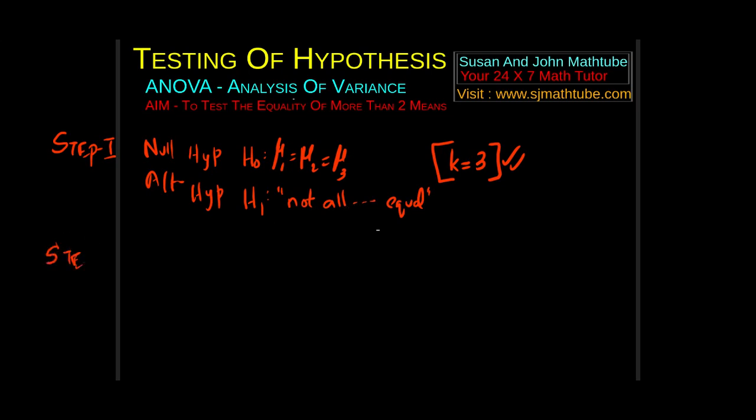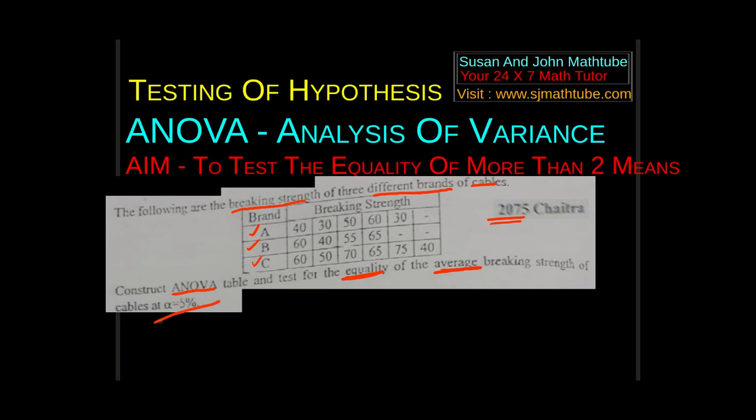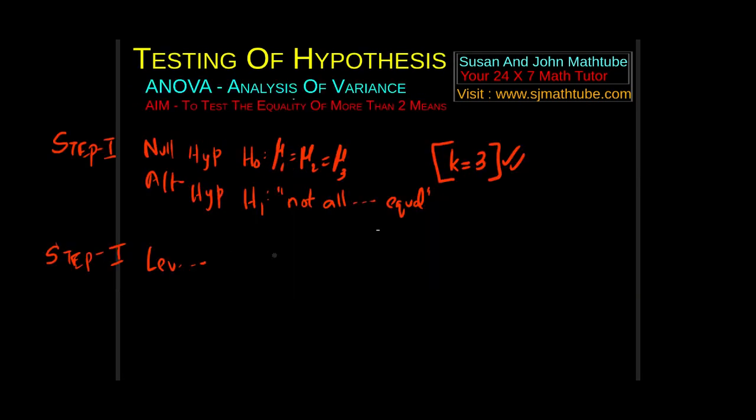Step number two, as always, is level of significance. The level of significance means the amount of risk we take. It was given in the question to use 5 percent. So we write alpha equal to 5 percent.